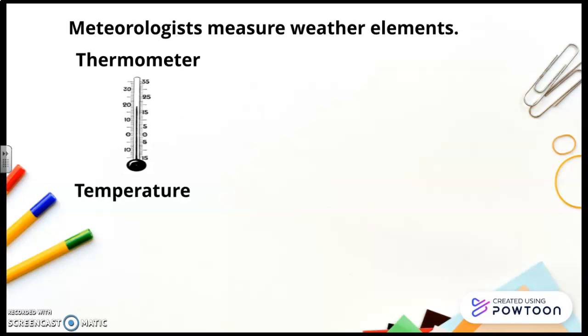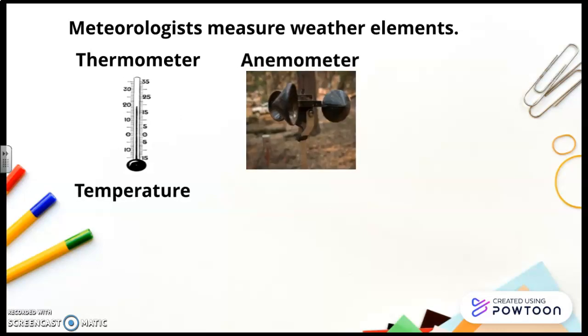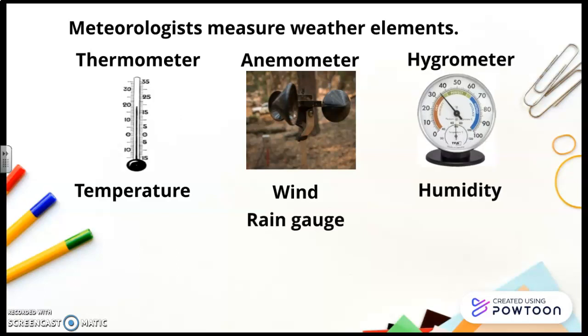Thermometer measures temperature. Anemometer measures wind. Hygrometer measures humidity. And finally, rain gauge measures precipitation.